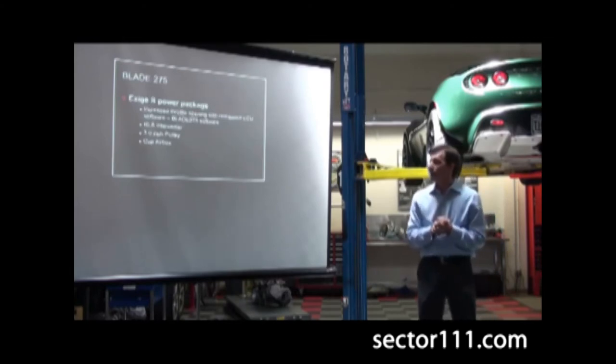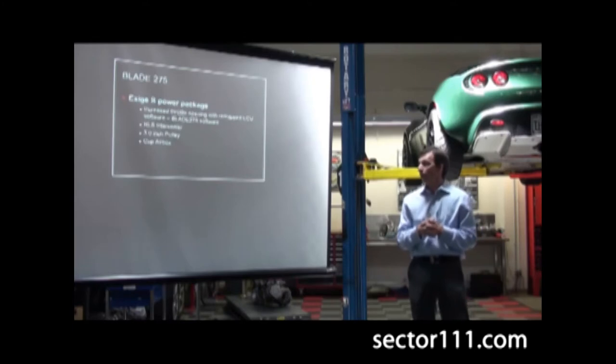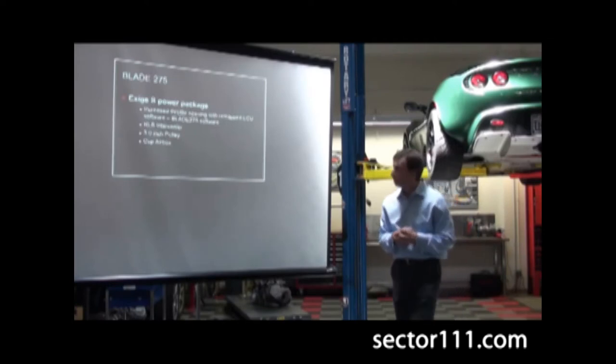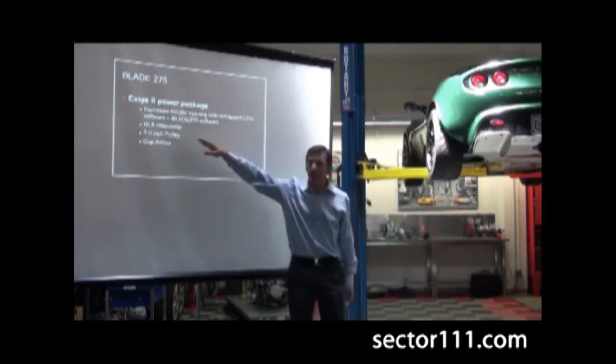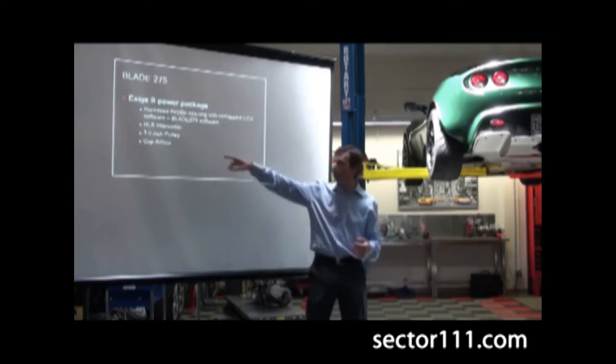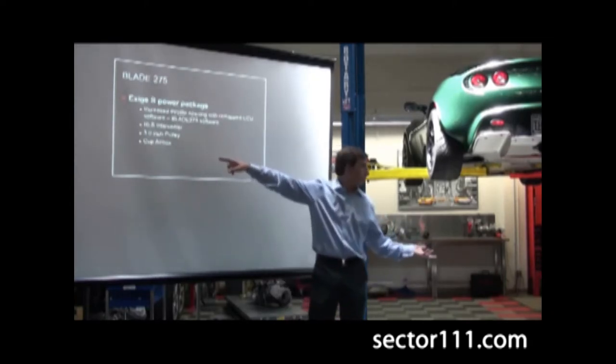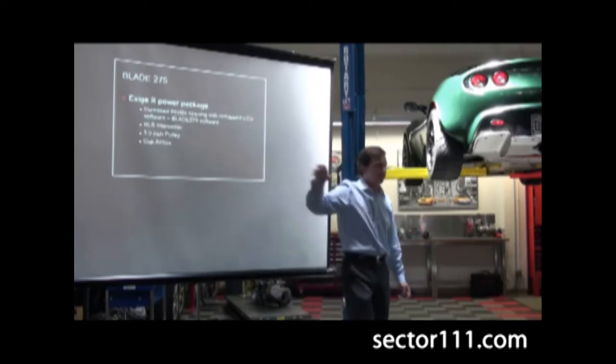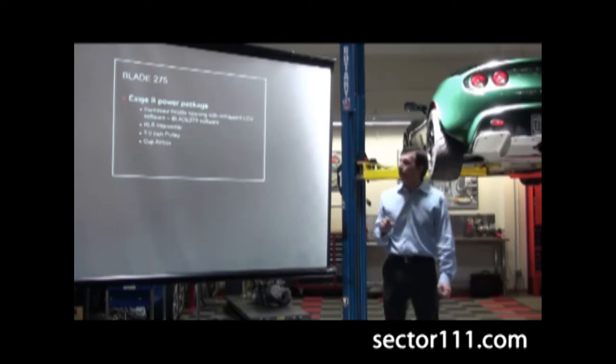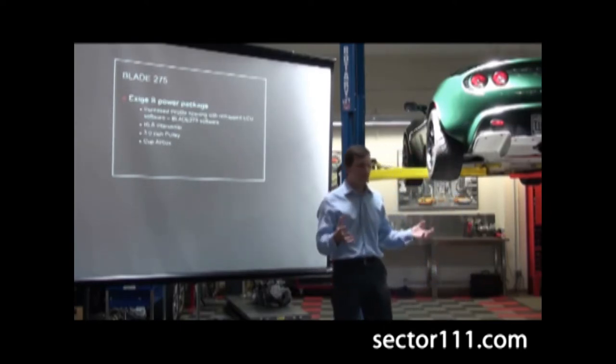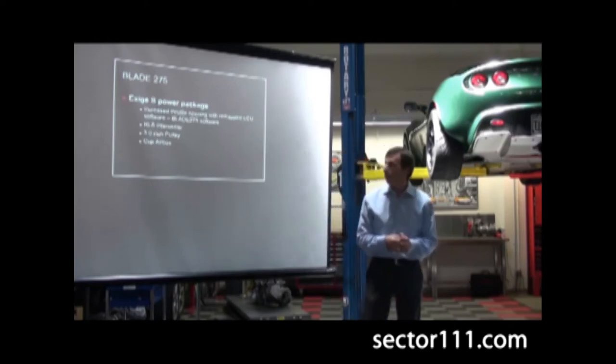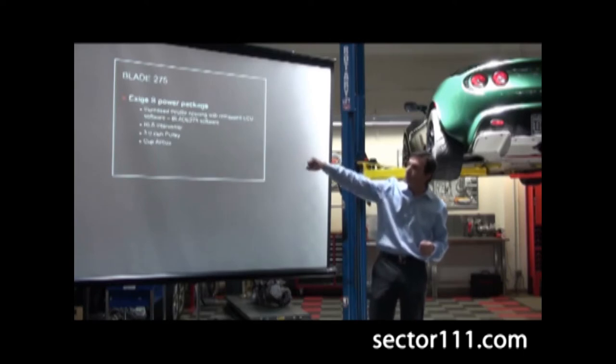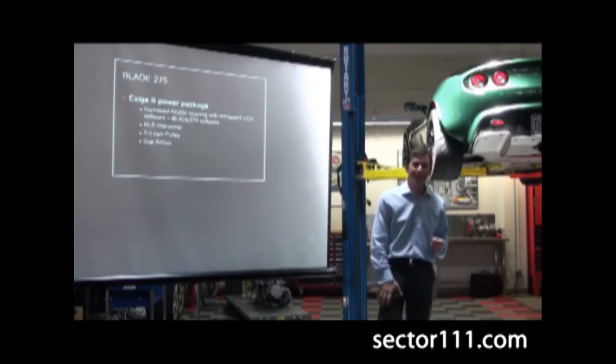The Blade 275 has increased throttle opening. We had to go in and find it and figure out how it worked, then we made a package out of it. A nice, safe, complete package that includes an RLS intercooler, that's really light stuff. A three inch pulley down from 3.3, and then the Cup air box, which is a nice standard from Lotus that we really like. This piece with the software and these three hardware items.